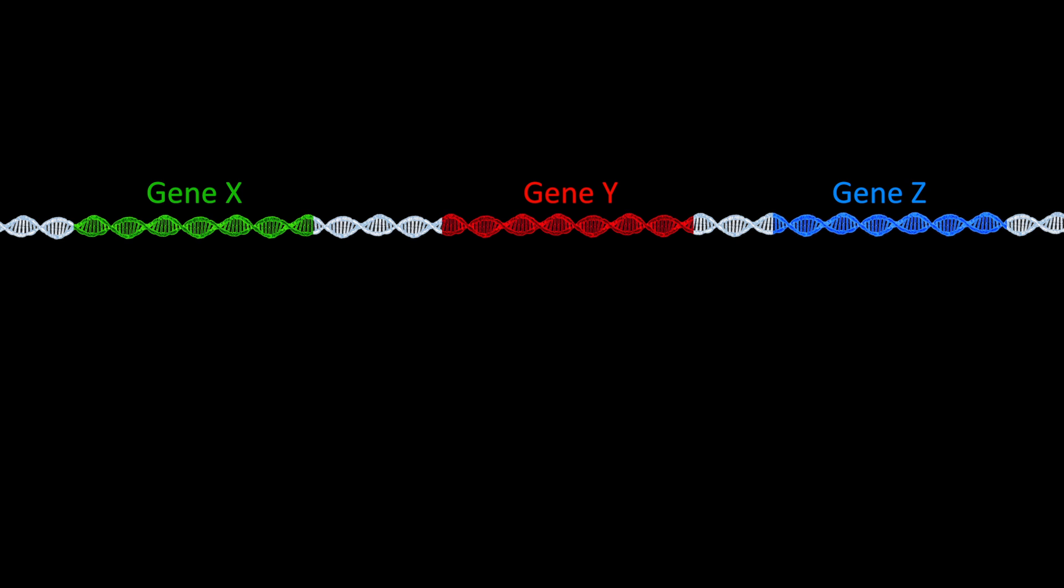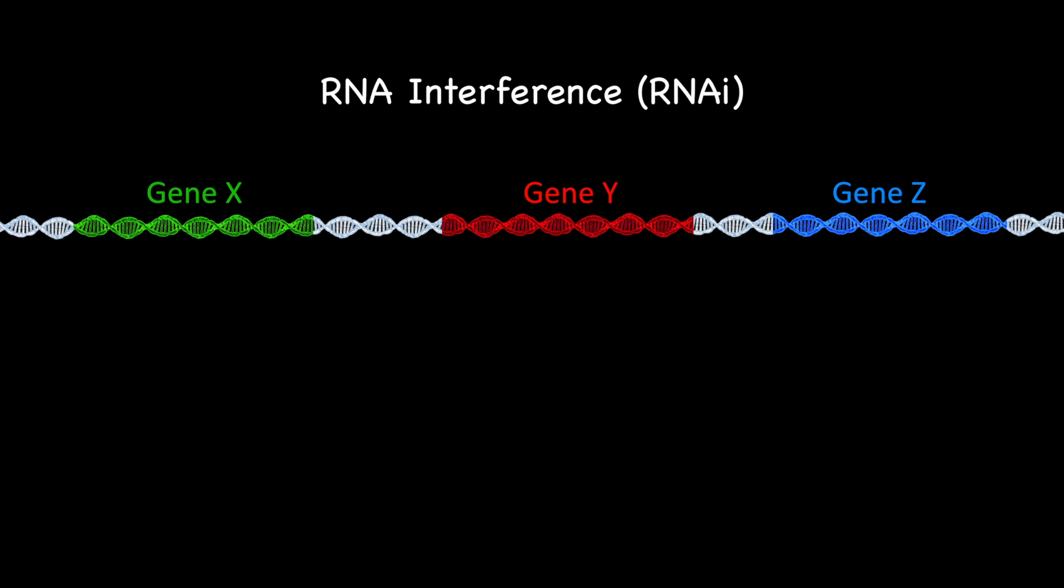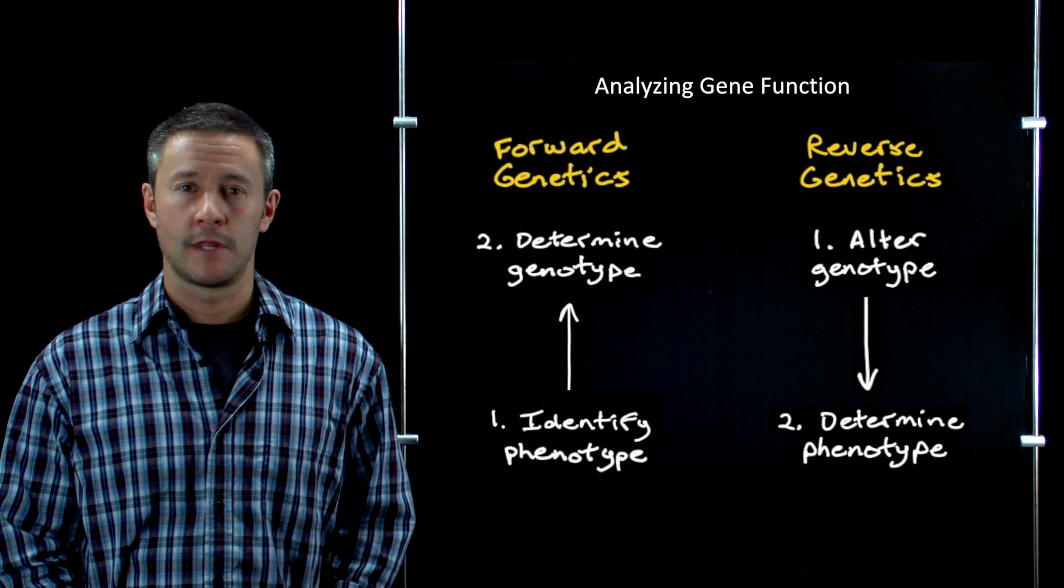So how do you do that? There are two important reverse genetics techniques that we'll look at in upcoming lectures. Gene knockouts, where you're physically deleting a specific gene from the genome, and then RNA interference or RNAi, where you use double stranded RNA to basically trick cells into shutting off the expression of the gene that you want to characterize. So with RNAi, the gene is still there, but its expression is reduced.